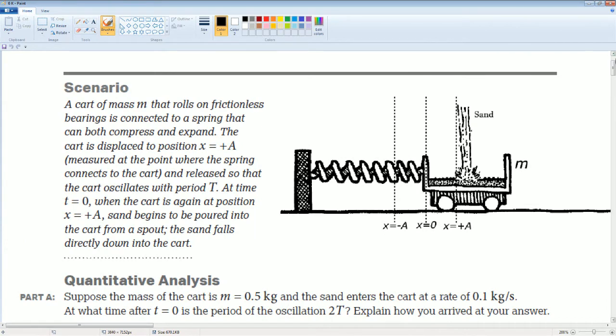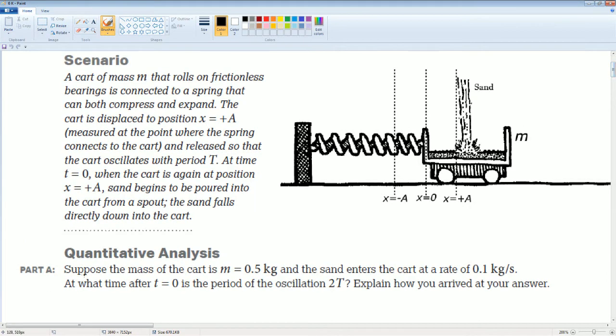Part A: Suppose that the mass of the cart is m equals 0.5 kilograms and the sand enters the cart at a rate of 0.1 kilograms per second. At what time after t equals 0